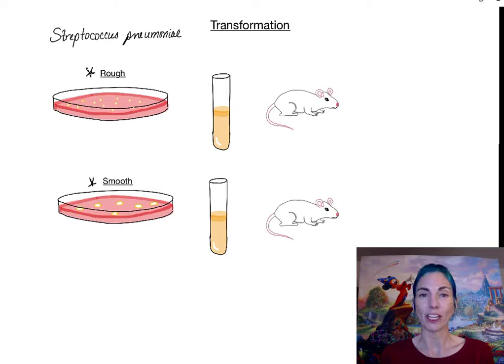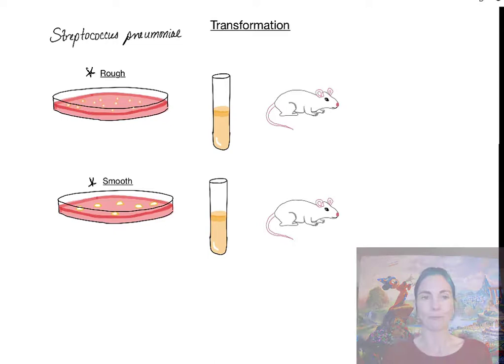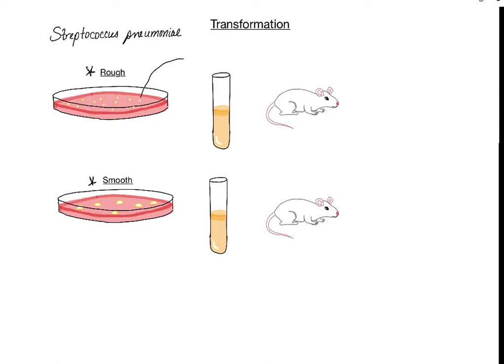He did not know what accounted for the difference at that point, but as he was doing his experiments he noticed something really interesting. If he picked a colony from the rough plate, grew it up in some broth, and then injected mice with that particular strain of Streptococcus pneumoniae, the mice lived.